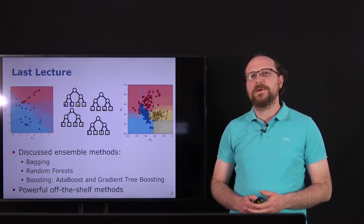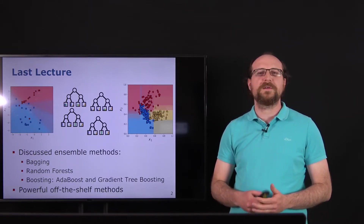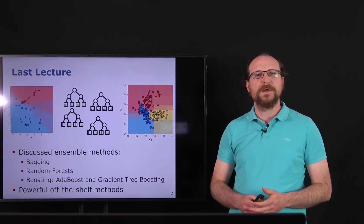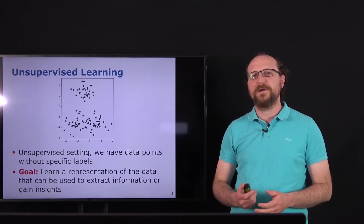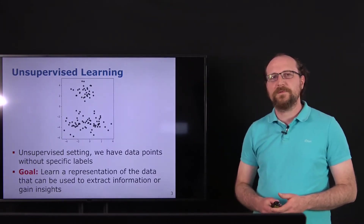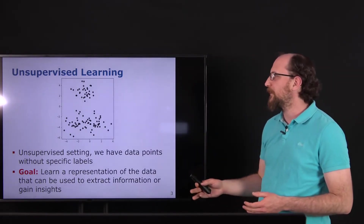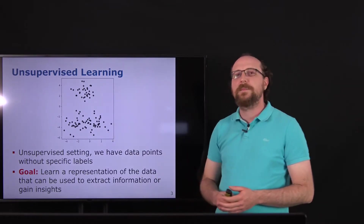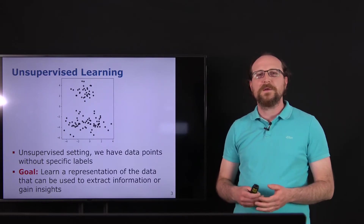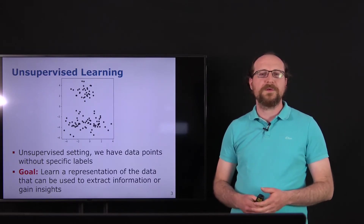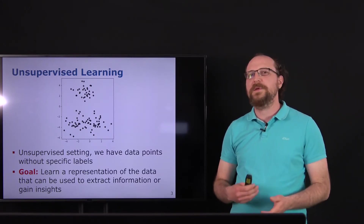In this lecture we want to leave the supervised setting, where we had a label available for each data point, and look at what we can do with just data. This is the topic of unsupervised learning. In unsupervised learning we just have the data without specific labels, so you will see that we don't have colored points anymore, but have some distribution of the data. The goal is to learn some representation that can help us extract information or gain insights.